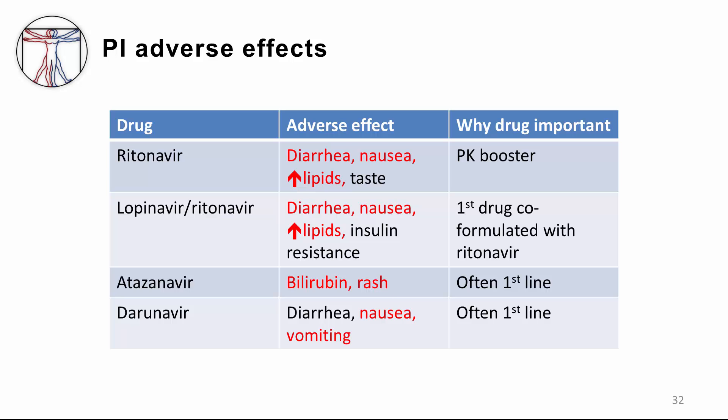With lopinavir and ritonavir, the adverse effects include diarrhea, nausea, and hyperlipidemia — no surprise since it includes ritonavir. This was the first drug co-formulated with ritonavir, taking advantage of these pharmacokinetics. Atazanavir is well known for elevated bilirubin and rash; it's often first-line therapy and despite those effects is very well tolerated. Darunavir is one of the newer protease inhibitors, often first-line, known for nausea and vomiting. Other protease inhibitors include saquinavir, nelfinavir, and indinavir as older agents, and tipranavir, amprenavir, and fosamprenavir as newer ones.